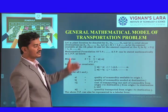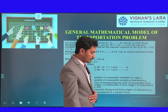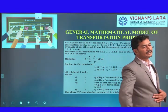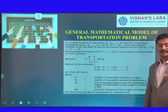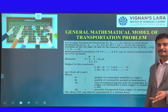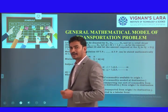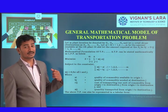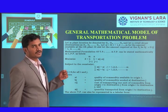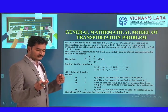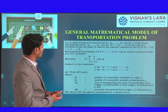Now, the general mathematical model of a transportation problem: in a linear programming problem, we have the standard form — an objective function and constraints are required. Here the constraints are different from regular LPP. There is no availability-and-requirement constraint as in LPP. Instead, we choose supply and demand constraints. In LPP we choose requirement and availability as constraints, but here in the mathematical formulation of the transportation problem we use supply and demand constraints.